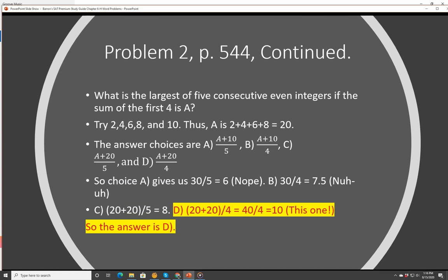Problem 2, page 544, continued. What is the largest of five consecutive even integers if the sum of the first four is A? We're going to take 2, 4, 6, 8, and 10. A is equal to 20. The answer choices are A plus 10 over 5, A plus 10 over 4, A plus 20 over 5, and A plus 20 over 4. Choice A gives us 20 plus 10 over 5, that's 30 over 5, which is 6. Nope, doesn't work. 30 over 4 is 7.5. Remember, we're looking for 10. C is 20 plus 20 over 5, that's 8. Close, but no cigar. Then we have 20 plus 20 over 4, that's 40 over 4, that's 10. So the answer is D.